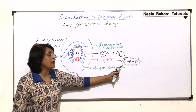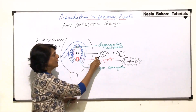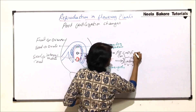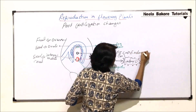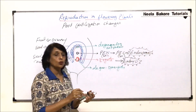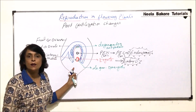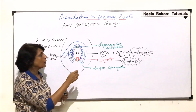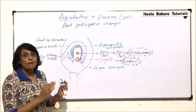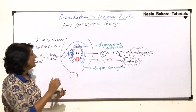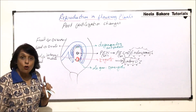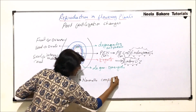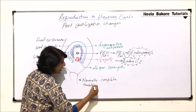The zygote is going to give rise to the embryo — this is one important post-fertilization change we have to study in detail. The other change is the formation of the nutritive tissue, that is, endosperm. So the primary endosperm cell is going to give rise to endosperm, which is the nutritive tissue. Simultaneously, the ovary changes into fruit, the ovule into seed, the zygote gives rise to the embryo, and by the time all these changes take place, the nucellar tissue normally gets completely used up.